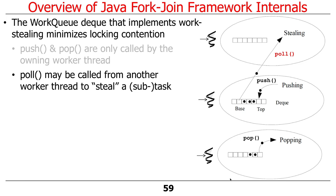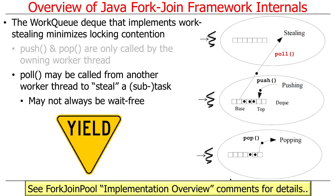Poll (stealing) may be called from a different thread, so it may not always be wait-free. In some cases the implementation has to yield and come back and try again. Stealing is fast and has low amortized contention, but on any given call it may not be as fast as pushing and popping with CAS. The one tricky case is when the deque is empty — then protection is needed since something else could be trying to steal at the same time.